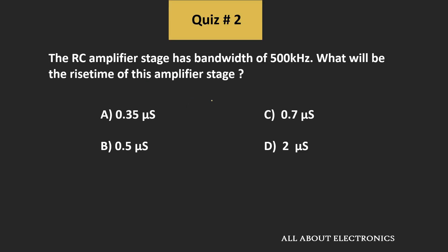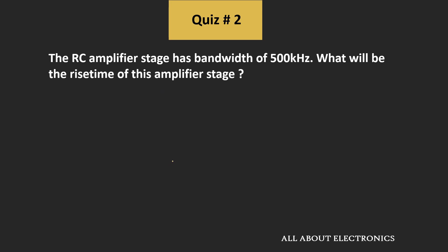In this question, we have been given the bandwidth of this RC amplifier stage, and we have been asked to find the rise time of the amplifier stage. For any amplifier or any particular system, the relationship between the bandwidth and the rise time is: bandwidth equals 0.35 divided by rise time. From this we can say that the rise time Tr equals 0.35 divided by bandwidth.